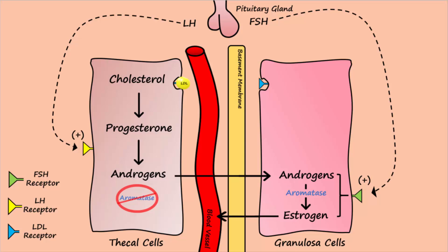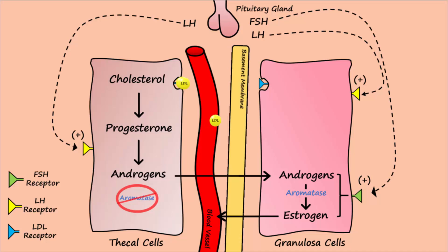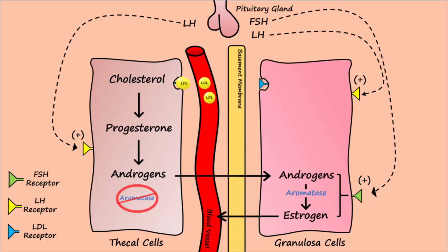Estrogen produced by the granulosa cells has a positive feedback on the hypothalamus and anterior pituitary, which brings about the LH surge. Granulosa cells have the ability to respond to LH stimulation like the thecal cells, but LDL particles do not cross the basement membrane easily. So granulosa cells are unable to make progesterone before ovulation.